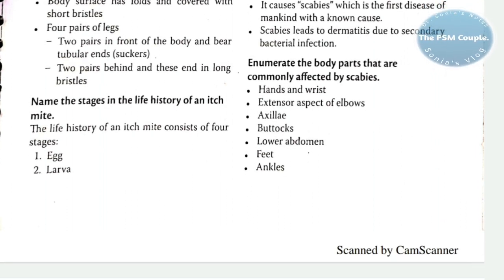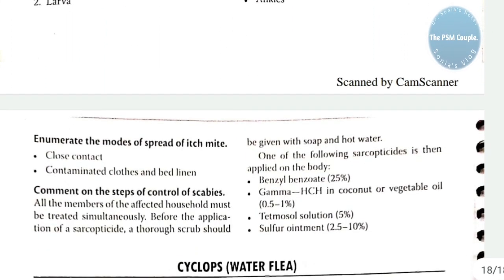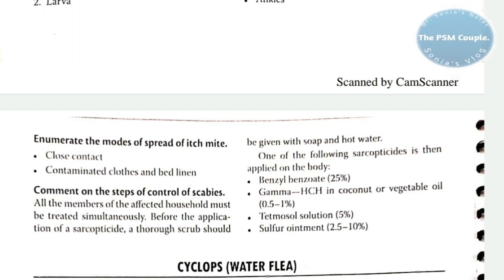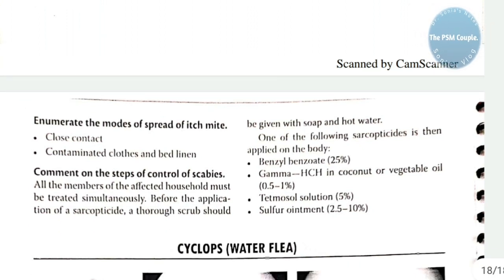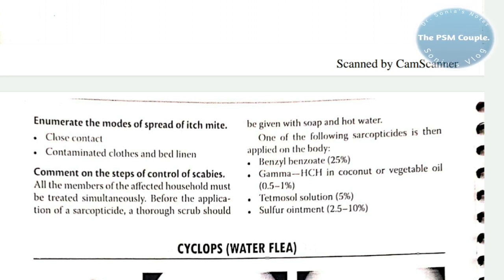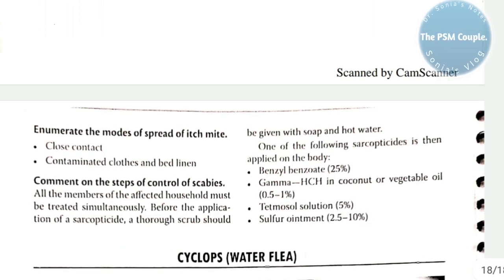To recap: body parts affected in scabies include hands, wrists, extensor elbows, axilla, buttocks, lower abdomen, feet, and ankles. Close contact and contaminated clothes and linen are the most common modes of spread. For control, scrub with soap and water, then apply benzyl benzoate, gamma BHC in coconut or vegetable oil, tetmosol solution, or sulphur ointment.